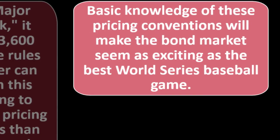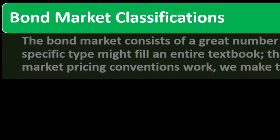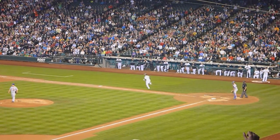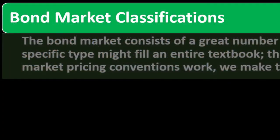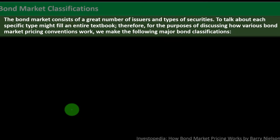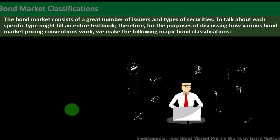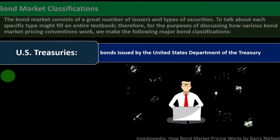Basic knowledge of these pricing conventions will make the bond market seem as exciting as the best World Series baseball game. Now, bond market classification: the bond market consists of a great number of issuers and types of securities. To talk about each specific type might fill an entire textbook. For the purpose of discussing how various bond market pricing conventions work, we make the following major bond classifications. First: U.S. Treasuries — bonds issued by the United States Department of the Treasury.